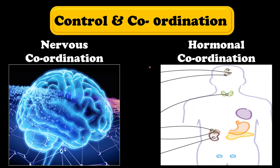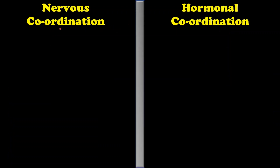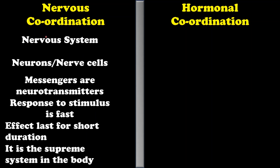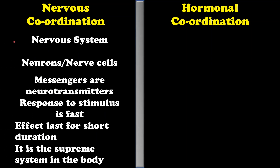So watch the video till the end. Students, to begin with, let us see some of the differences between nervous coordination and hormonal coordination. Nervous coordination is a part of the nervous system, which mainly consists of neurons and supporting cells such as glial cells.